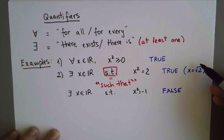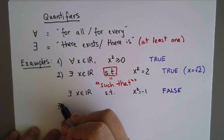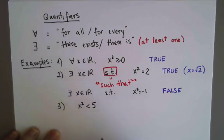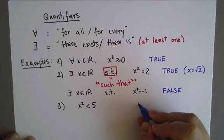So these are examples of statements with 'for all' and with 'there exists.' But I want to contrast both of them with the following. If I look at this statement just by itself, x² less than 5, without saying anything else, this is neither true nor false. This is actually meaningless.